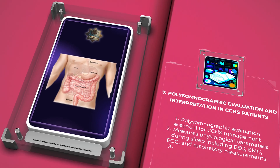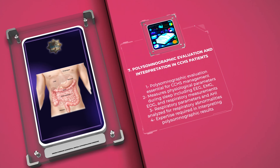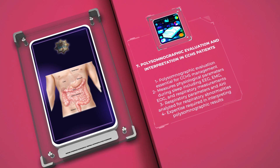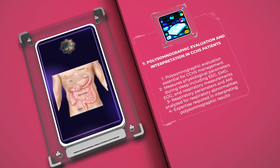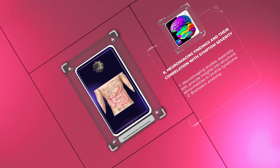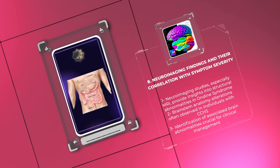Polysomnographic evaluation — a comprehensive sleep study — is an essential diagnostic tool for CCHS. It involves monitoring EEG, EMG, EOG, airflow, and respiratory effort during sleep. In Ondine syndrome patients, respiratory parameters such as minute ventilation and the apnea-hypopnea index (AHI) are carefully examined to identify central hypoventilation and apneas. Interpreting these results requires expertise in recognizing patterns of disordered breathing and associated sleep architecture disruptions.